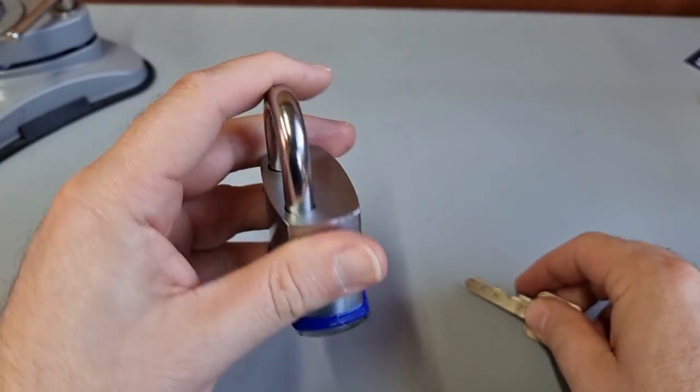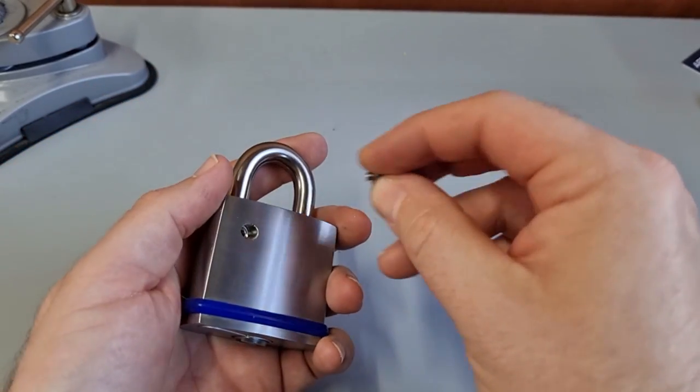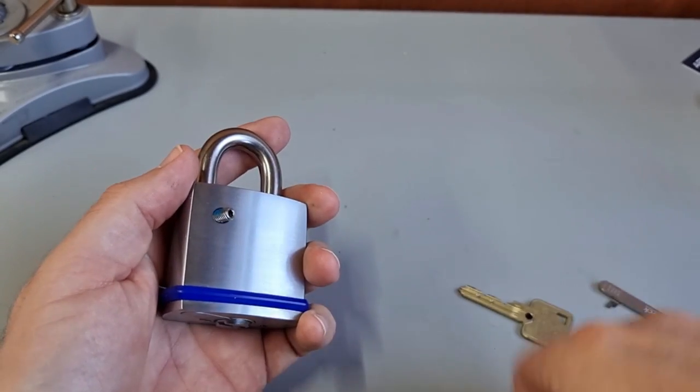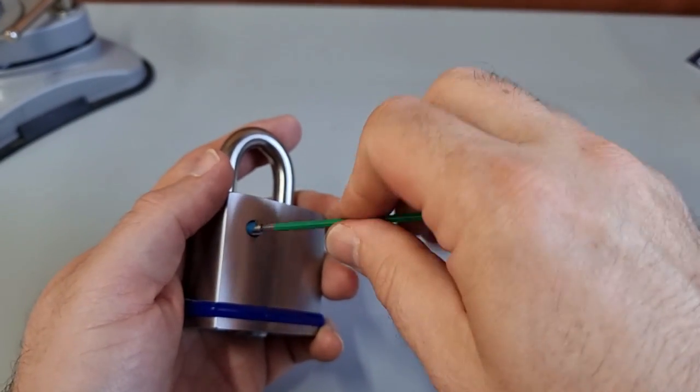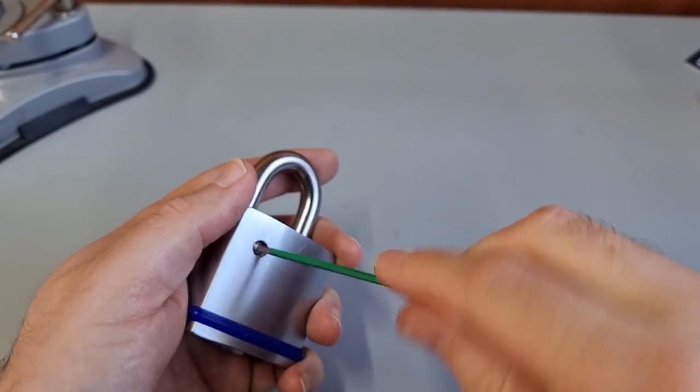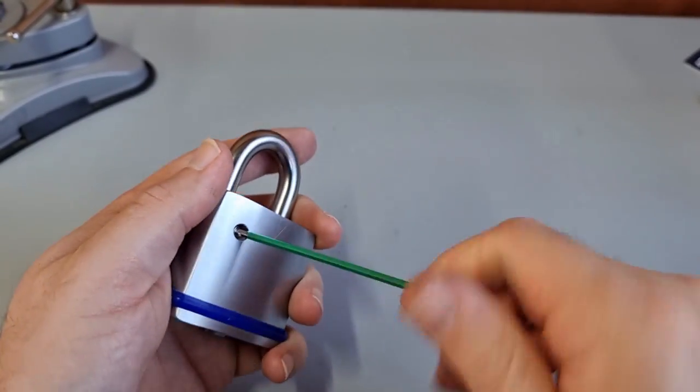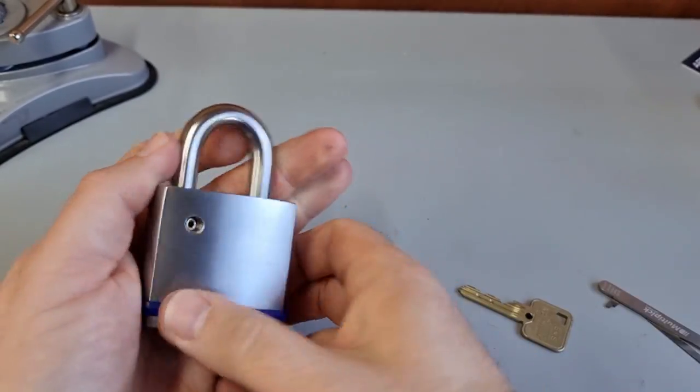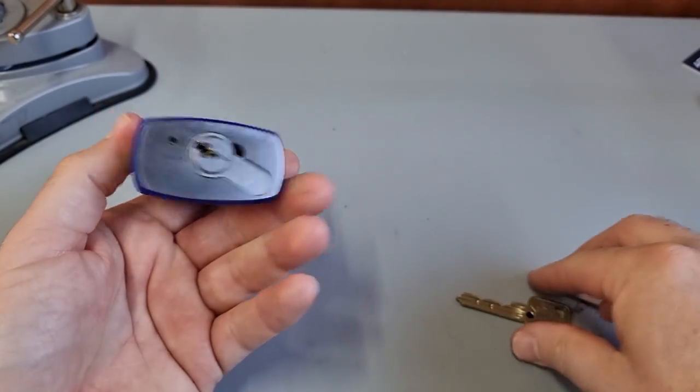Got my preferable euro spec, pop it in there, close the shackle, lock it. Then all I've got to do is tighten up that hex screw allen key, and quite a nice lock has been made a little bit better.